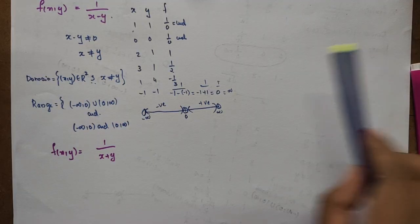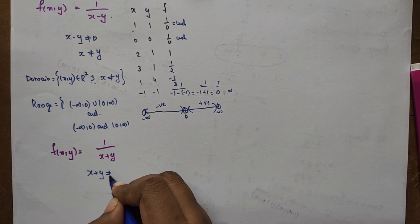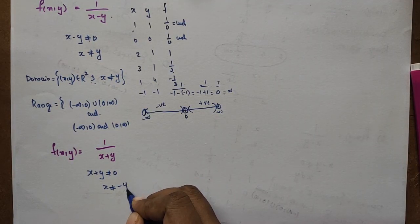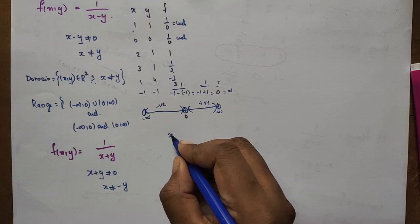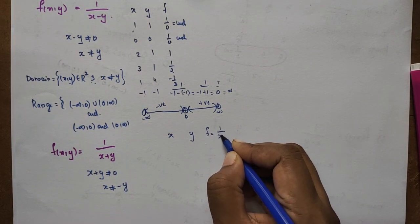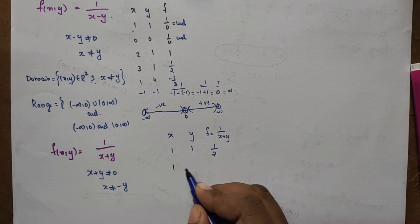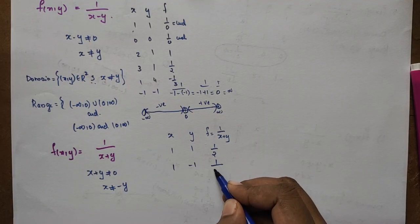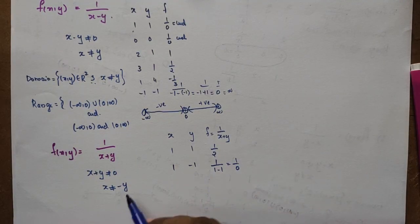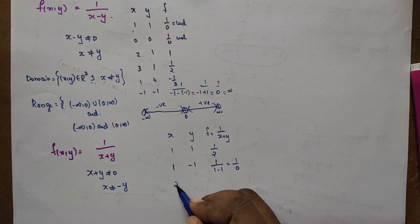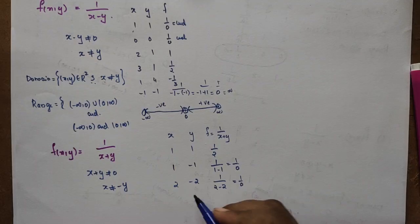For f(x,y) = 1/(x+y): the denominator is 0 when x+y = 0, i.e., when x = −y. For example, if x=1, y=−1, then 1/(1+(−1)) = 1/0, undefined. So x = −y gives the undefined case.